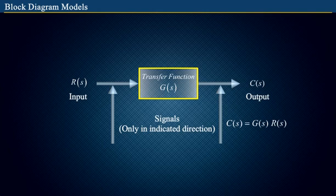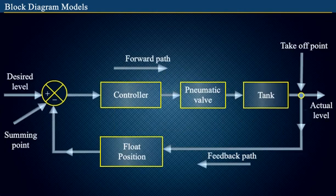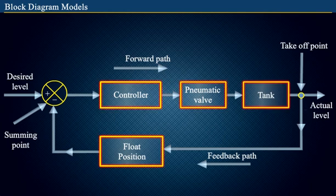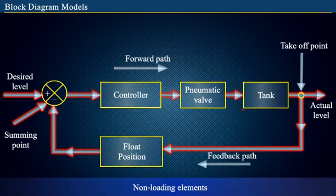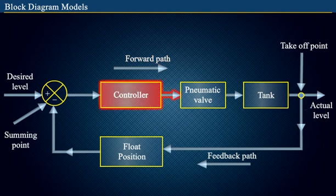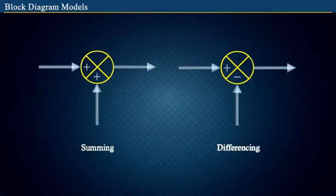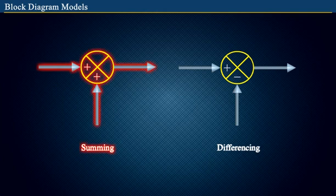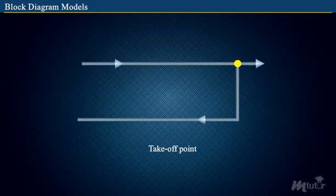Whereas a complex system comprising of several non-loading elements is represented by the interconnection of the blocks for individual elements. The blocks are connected by lines with arrows indicating the unidirectional flow of information from the output of one block to the input of the other. The summation of input signals is represented by a point called summing point, and the summing or differencing of signals is indicated by the symbol as shown. The takeoff point of a signal is represented as shown.